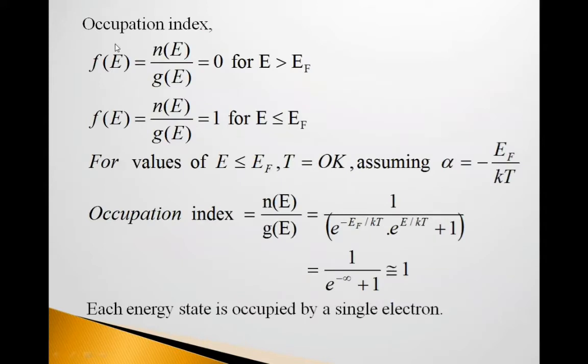Now, we will see occupation index. Occupation index means the extent to which the states are filled by particles, by electrons. So, f(E) is given by n(E) upon g(E) is equal to 0 for E greater than EF, Fermi energy. f(E) is equal to n(E) upon g(E) is equal to 1 for E less than equal to EF.